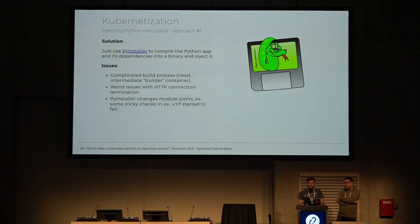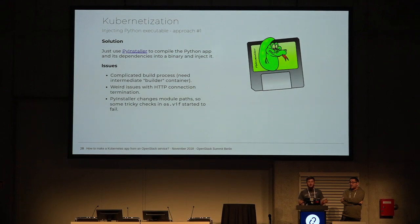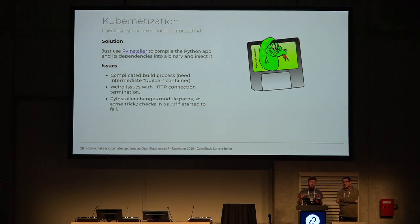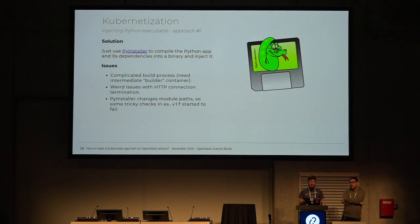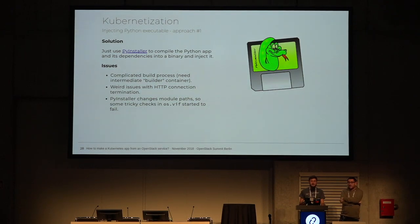There were several issues with the PyInstaller approach. First, the build process of the container was complicated because we needed an intermediate container with PyInstaller installed, copied the code there, compiled it into a binary, and then created a second container with the Kuryr Daemon. We also had some HTTP connection termination issues causing false positive errors in the Kuryr Daemon logs. But the main problem was that one day the OVS library added some checks depending on module paths - and PyInstaller changes those module paths. So we suddenly stopped working. We asked the OVS guys to remove the checks and they told us to fix our application. So we did.